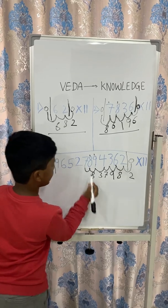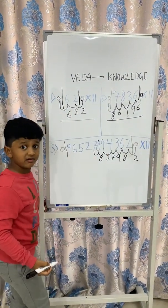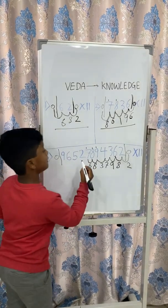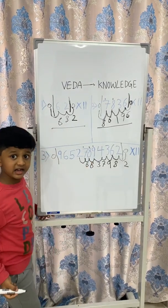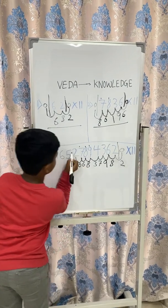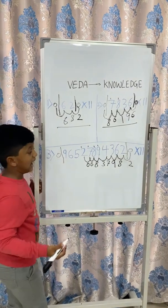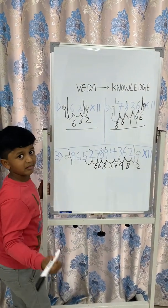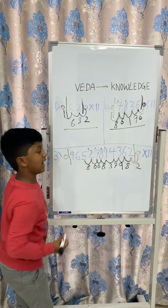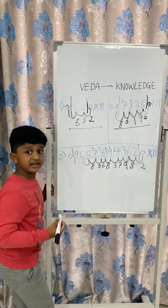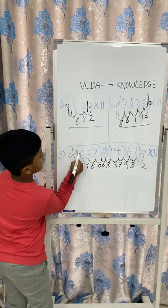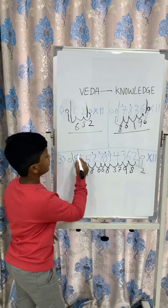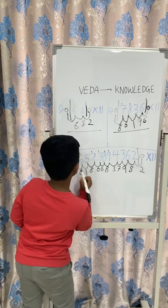Then we add 8 plus 7 which gives you 15, 15 plus the carried 1 makes it 16. We write 6 and carry the 1. Then we add 7 plus 2 which gives you 9, plus the carried 1 makes it 10. So, we write 0 and carry the 1. Then we add 5 plus 6 which gives you 11, we write 1 and carry the 1.